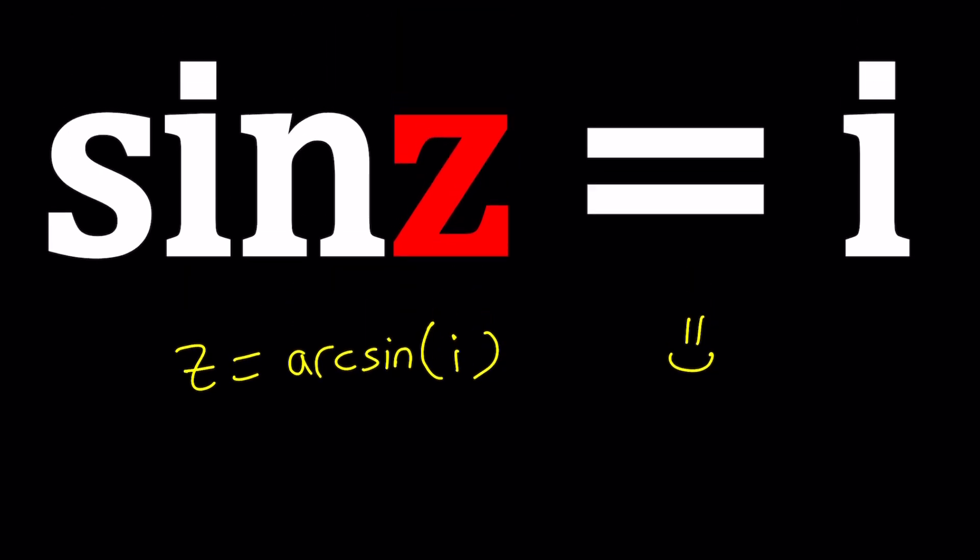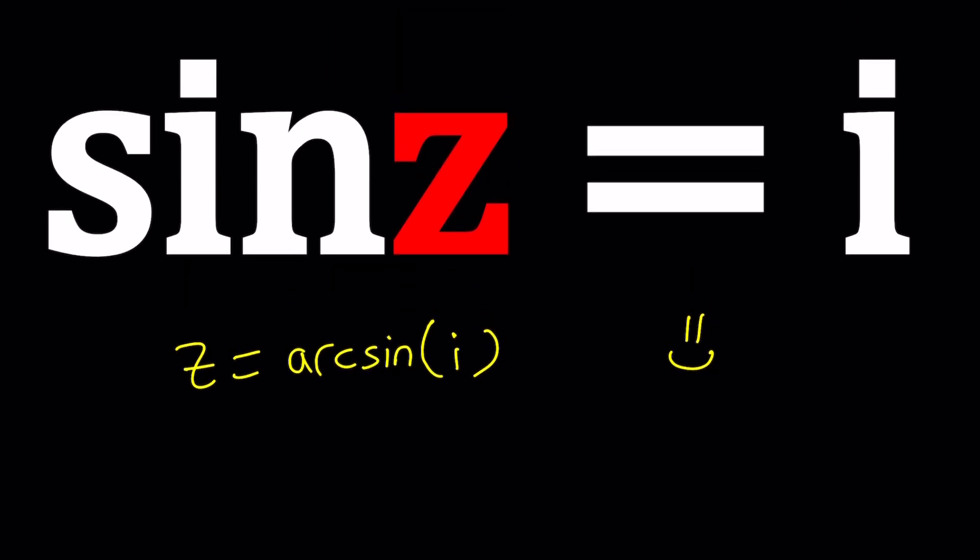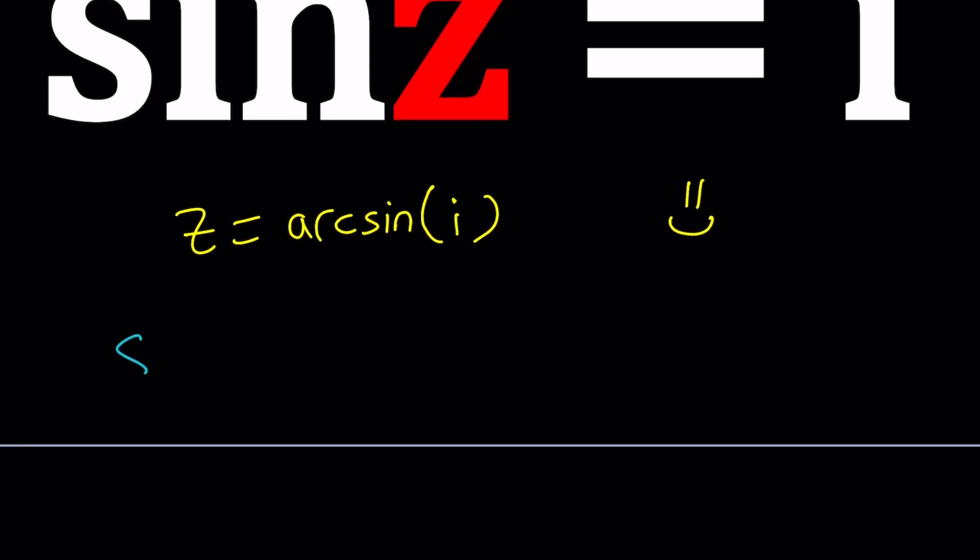So here's what we're going to do. We're going to express sine using complex numbers or Euler's formula. Euler's formula tells us that, and this is beautiful, sine z can be written as e to the iz minus e to the negative iz divided by 2i. And now in this case, we're going to set it equal to i.